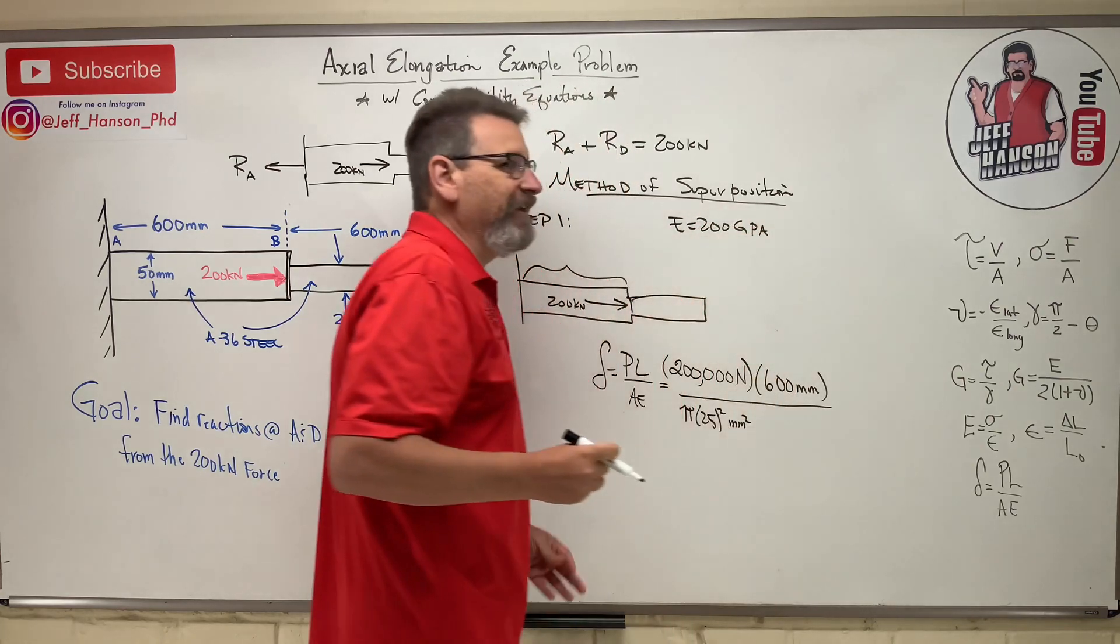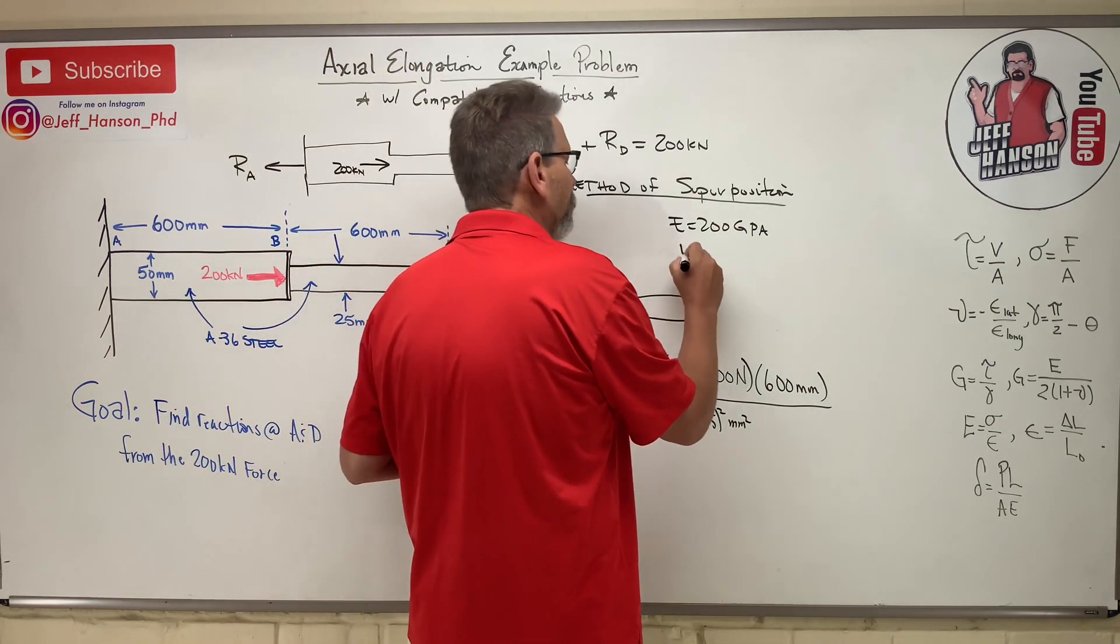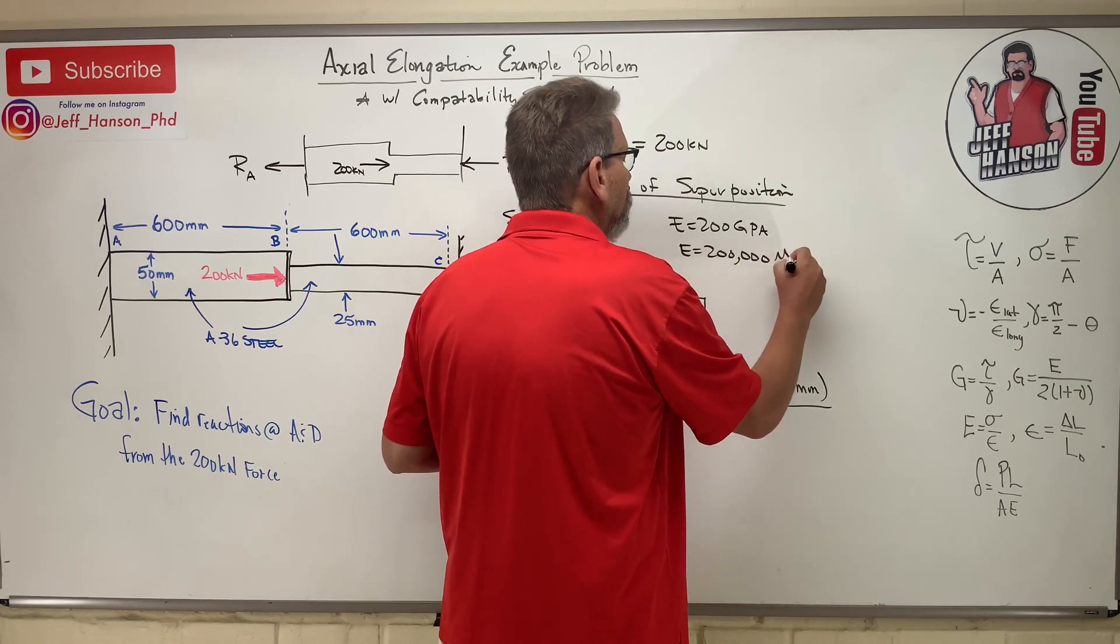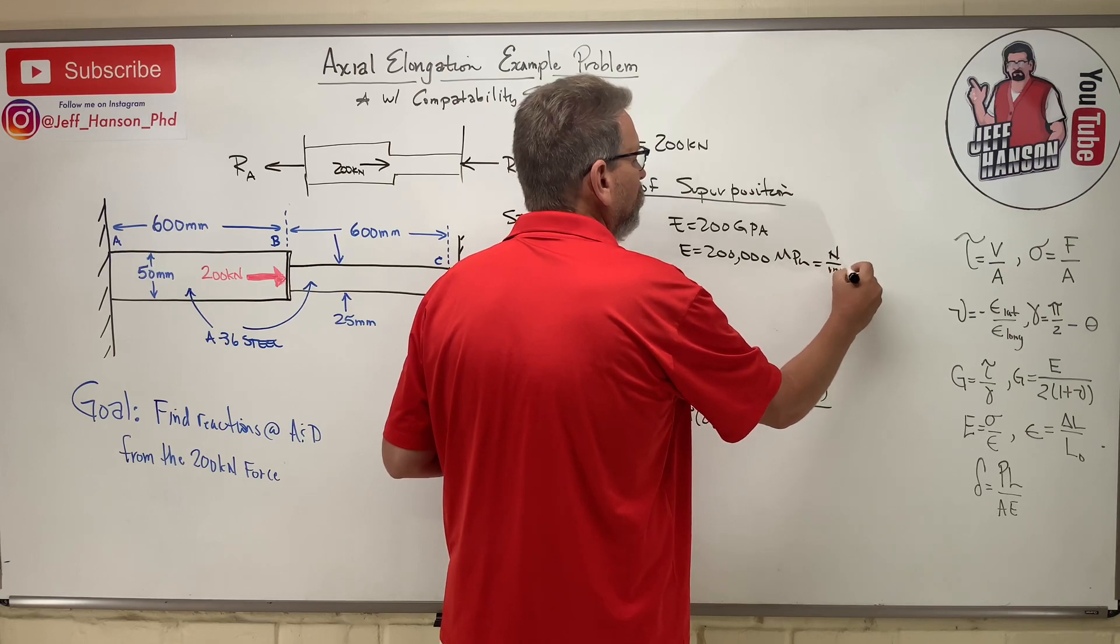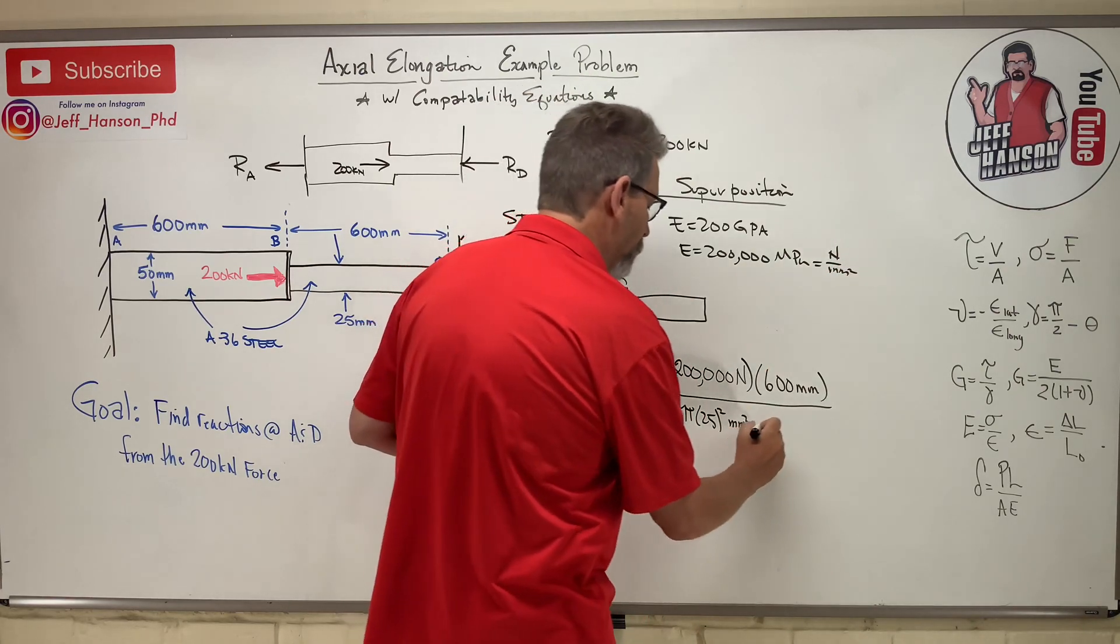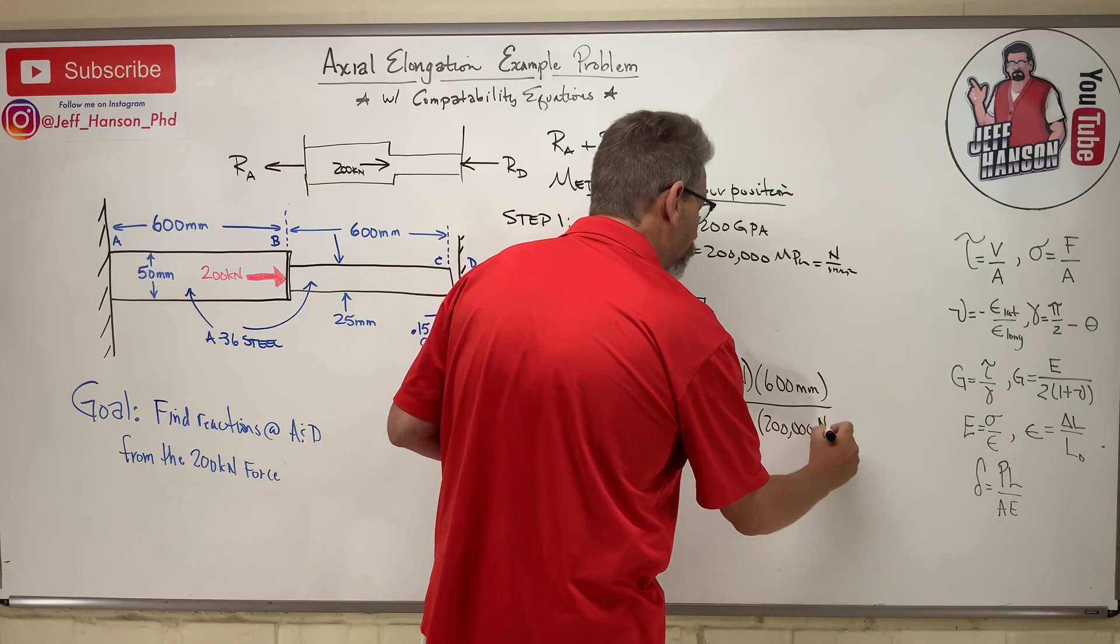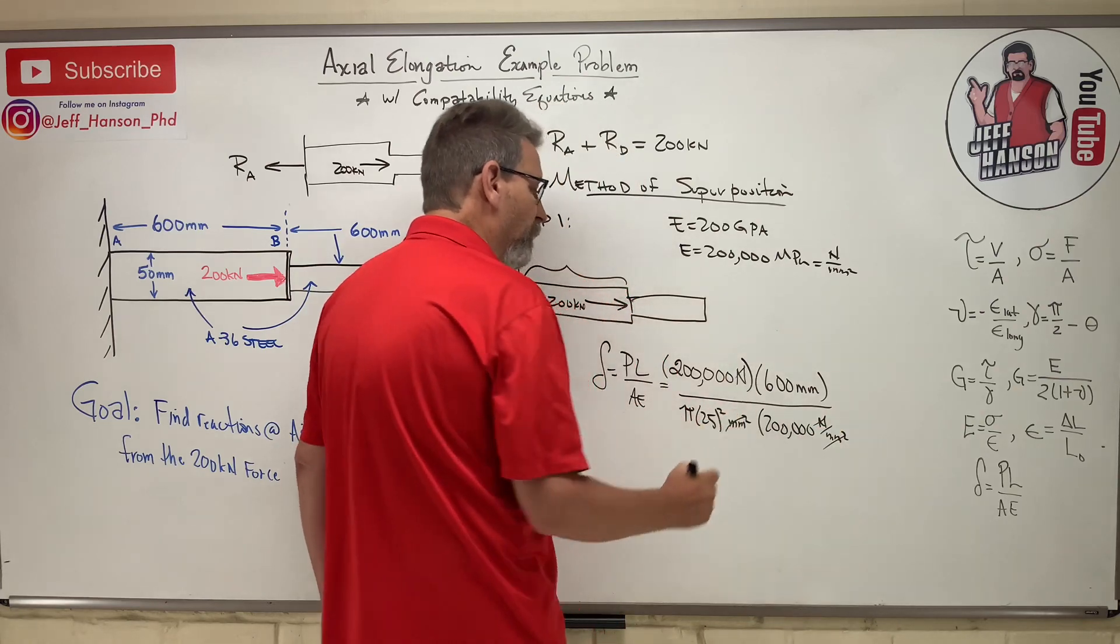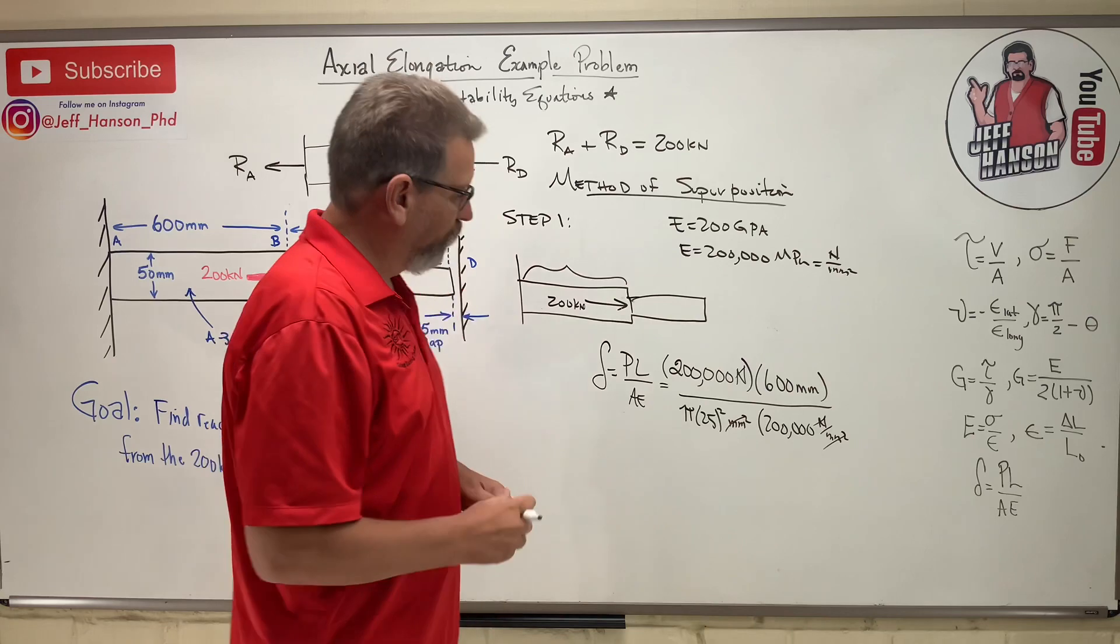If I want to turn that into mega, giga is 10 to the 9, mega 10 to the 6, so that's three extra zeros, isn't it? So E equals 200,000 megapascals, which is a newton over millimeter squared, right? So I'm going to put 200,000 newton over millimeter squared. Millimeter squared goes away, newton and newton go away, and that's going to leave me with a delta in millimeters. That's what I wanted.